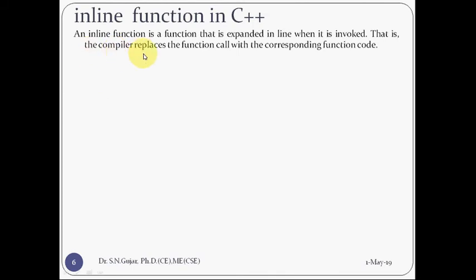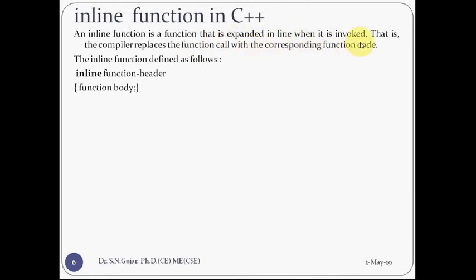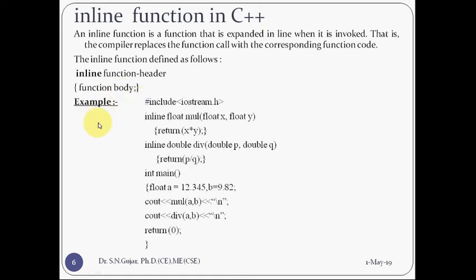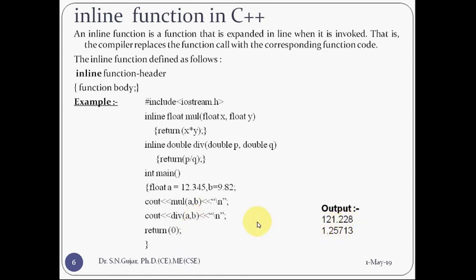Now, inline functions. An inline function is a function that is expanded in line when it is invoked - the compiler replaces the function call with the corresponding function code. The syntax is: inline, then function header name, then function body. For example: inline float multiple(float x, float y) returns x multiplied by y. And inline double division(double p, double q) performs division. In the main function you call multiple(a, b) and division(a, d) to get the output.